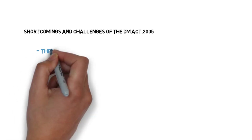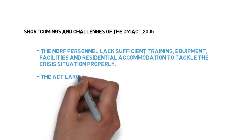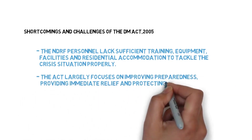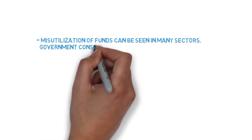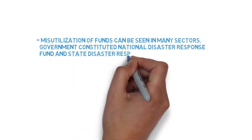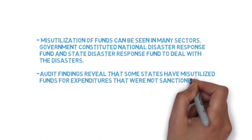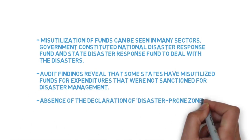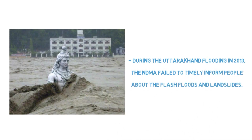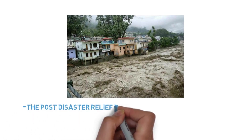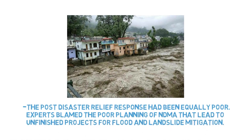Of course, shortcomings were also there. The NDRF personnel lack efficient training and equipment facilities and accommodation to tackle crisis situations properly. The act largely focuses on improving preparedness and immediate relief, but it neglected the long-term recovery, which was an important fact. Misutilization of funds can be seen — audit findings revealed that some states misutilized the National and State Disaster Response Funds for expenditures not sanctioned for disaster management. There was also absence of declaration of disaster-prone zones. During the Uttarakhand flooding in 2018, the NDMA failed to timely inform people about flash floods and landslides, and the post-disaster relief response had been equally poor.